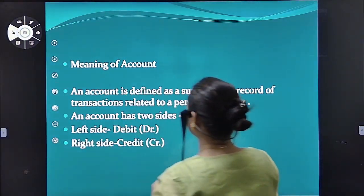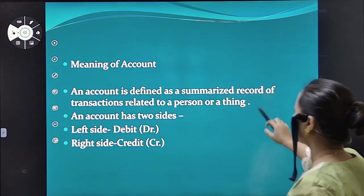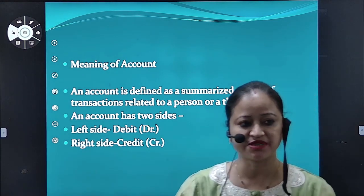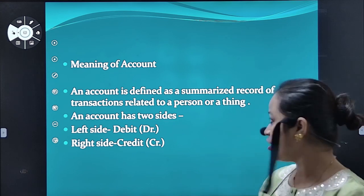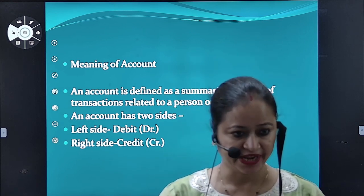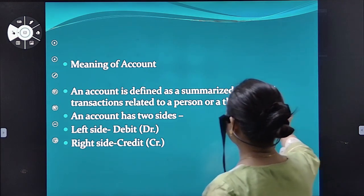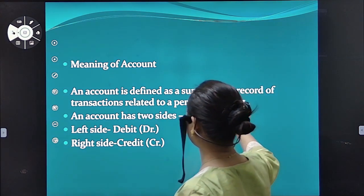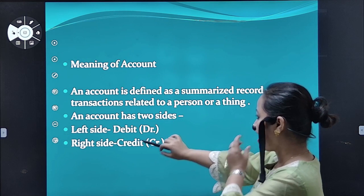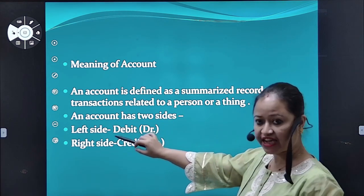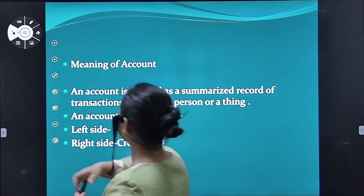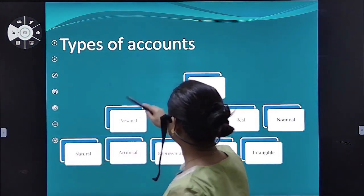Last class I told you what an account is all about. An account is defined as a summarized record of transactions related to a person or a thing. A person can be Mr. X, Tina, Sheena, Ajay, Vijay, or a thing can be salary, rent, a building, or plant. An account has two sides: the left side is the debit side and the right side is the credit side. In short, we write debit as DR and credit as CR.